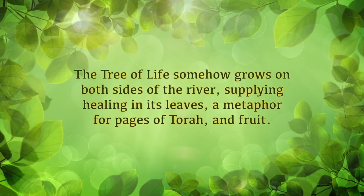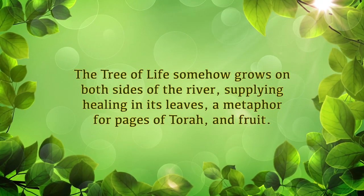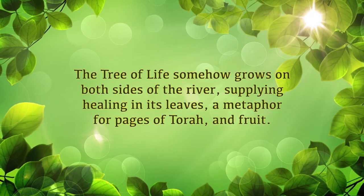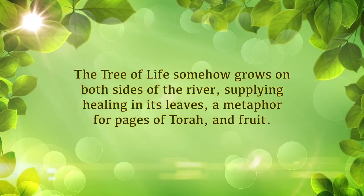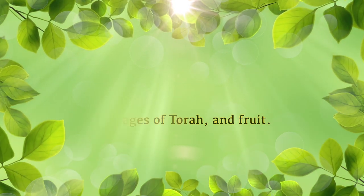That's enough of a foundation to understand the importance of why, with this tree of life growing on both sides of the street of the holy city, there would be 12 different kinds of fruit and how the trees of the river would have healing. Because the leaves are a metaphor for the pages of the Torah. The healing is coming through the word of Adonai, which I think is why Yeshua is called the Word of God in the book of Revelation.